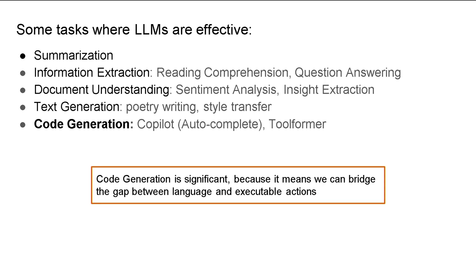LLMs are generally effective at many operations on synthesis and understanding of text. Summarization and information extraction are great examples. For document understanding — not just picking a piece of data out of text, but asking questions involving some reasoning over text — they also do quite well. Sentiment and analytics is one example; insight extraction is another, like reading an earnings report and finding the top insights. Text generation is another category — things like style transfer get at these basic capabilities.